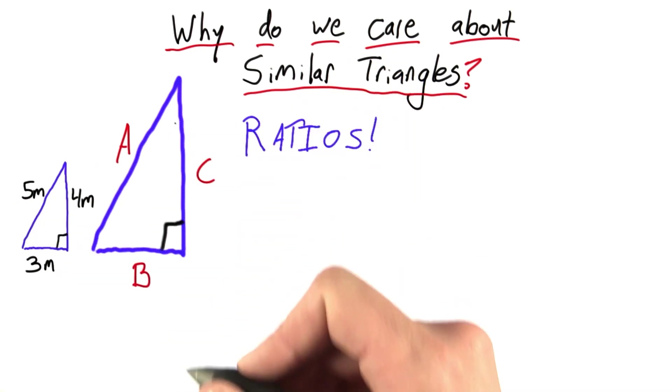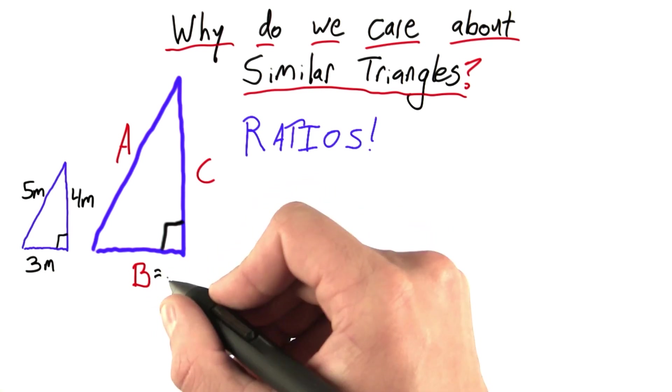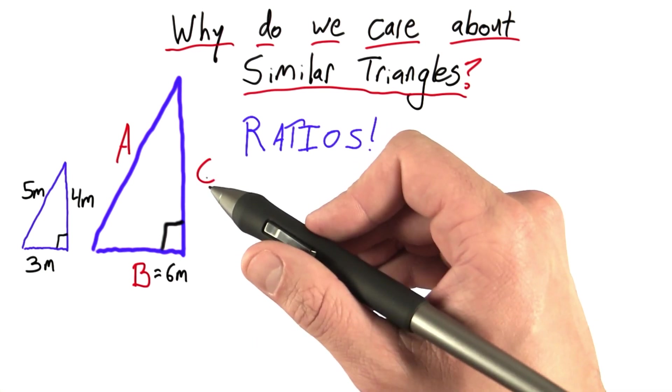And these are still unknown. But let's say I told you that side big B was equal to 6 meters. I can use this to calculate side big C.